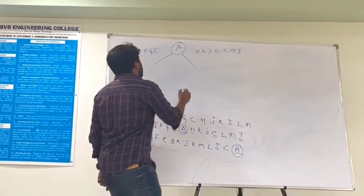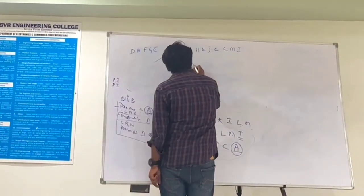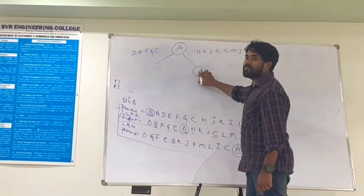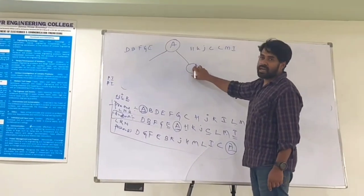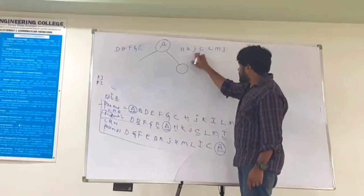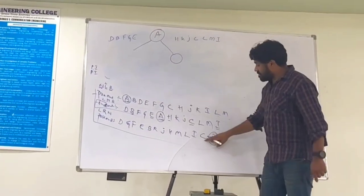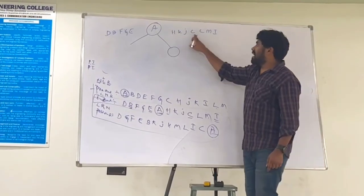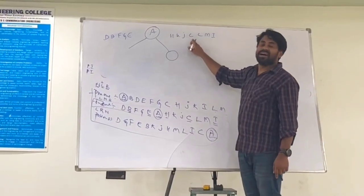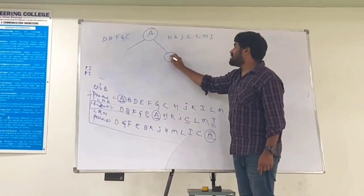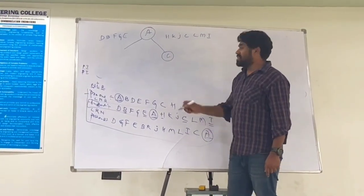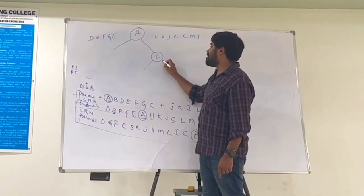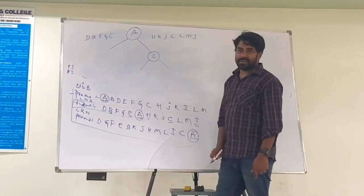Now I'll start solving from the right side. There will be one person coming here. In this, who is repeating first in post-order? C. C is there. So I'll write C. Now C might have a left side and might have a right side.